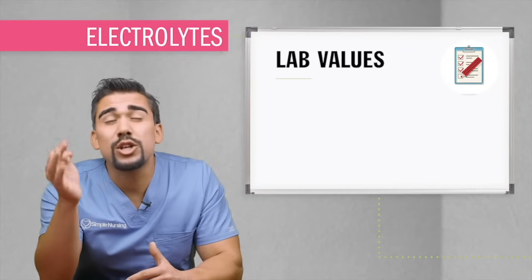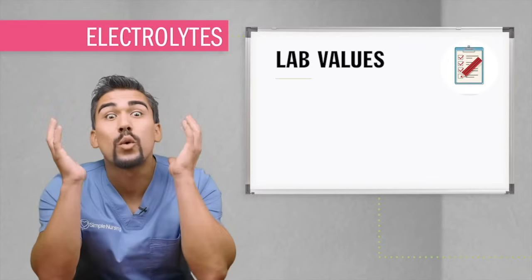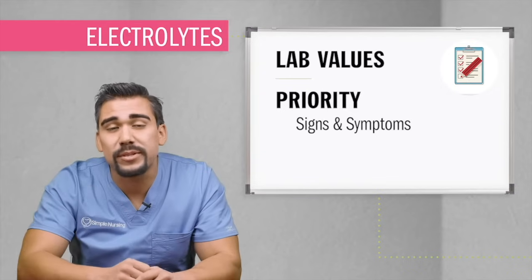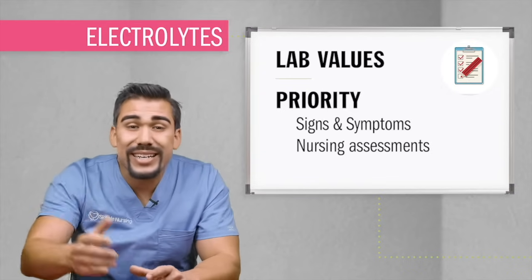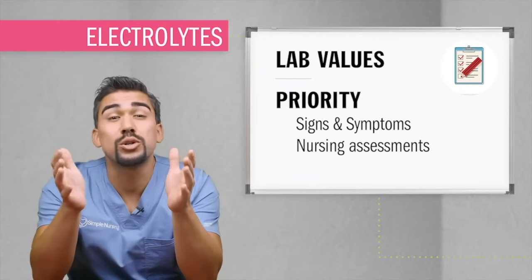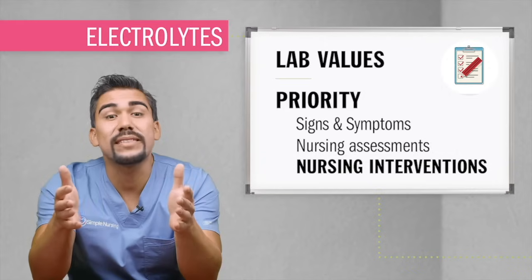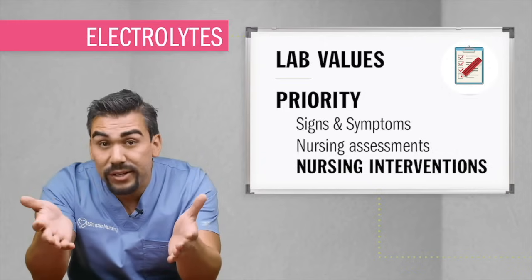Third, electrolyte values and priorities — laboratory values that you will be tested on for sure. Also priority signs and symptoms, nursing assessments, as well as those crucial nursing interventions. Basically everything that you should have highlighted in your book, so I'm taking the guesswork out of it and highlighting the book for you. We're only covering the most important things that love to show up on the nursing exams and ultimately the NCLEX.